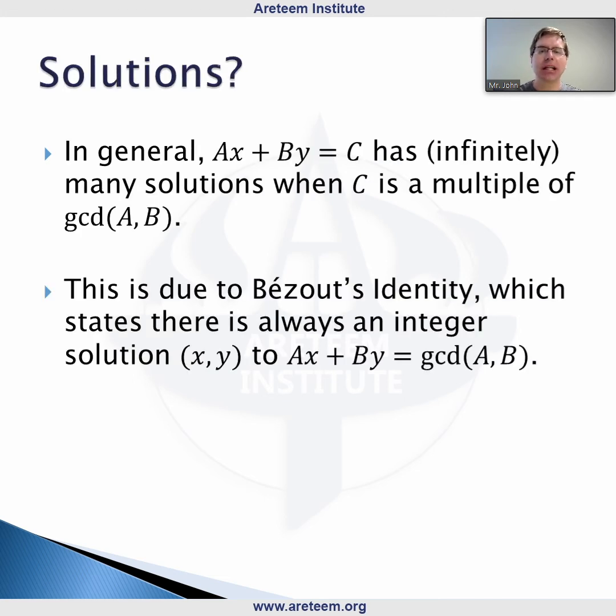It's actually pretty simple. The simple fact is we need C to be a multiple of the GCD of A and B. This is where number theory comes in. In that example, the GCD of 3 and 6 is 3, and 4 is not a multiple of 3.